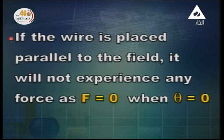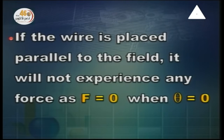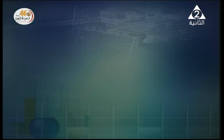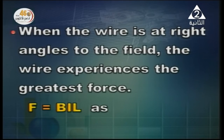If the wire is placed parallel to the field, it will not experience any magnetic force — the force equals zero, because F = B I L sin theta and theta = 0, so sin 0 = 0. When the wire is at right angles to the field, it will experience the maximum force — simply B I L — because sin 90° = 1.